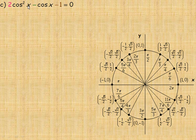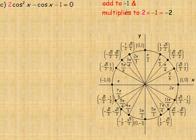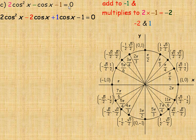In example C, we solve 2 cos²x − cos x − 1 = 0. This is a quadratic-type equation with no common factor, similar to factoring 2x² − x − 1 = 0. We find two numbers that add to negative 1 and multiply to the product of 2 and negative 1, which is negative 2. Those numbers are negative 2 and 1. We rewrite the middle term: 2 cos²x − 2 cos x + cos x − 1 = 0. Factoring 2 cos x out of the first two terms gives 2 cos x(cos x − 1), and the last two terms factor as 1(cos x − 1).